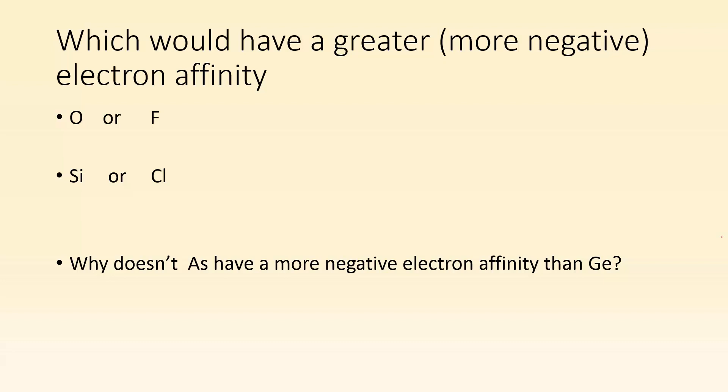So applying this stuff, which would have a greater or more negative electron affinity, oxygen or fluorine? If I'm taking a look, they're in the same period, and they're next to each other. Which one's going to have greater electron affinity? Probably the one in group 17, the one that is so much closer to becoming a stable octet. Same thing going on, silicon or chlorine. If you take a look, they're in a similar situation. Silicon we have over here, chlorine we have in the same period. Chlorine is just one away from that stable octet. So that one's going to give you a more negative electron affinity.